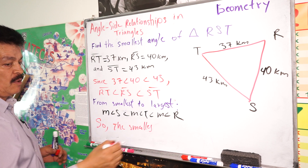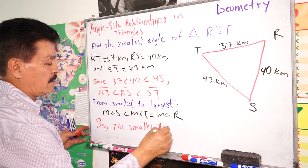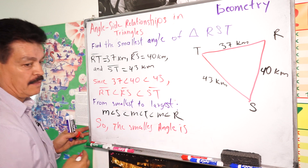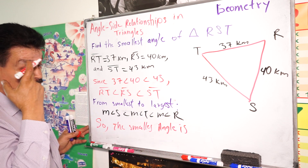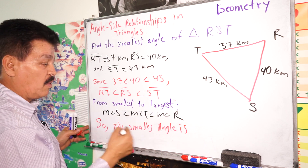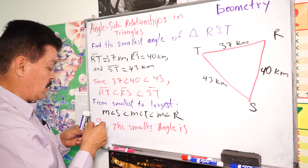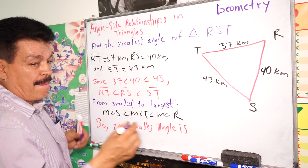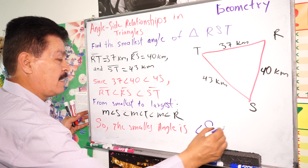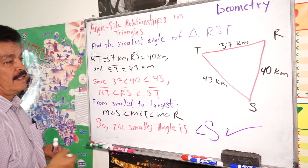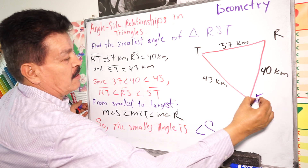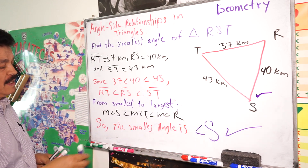So the conclusion is: the smallest angle is angle S. Angle S is the smallest one.